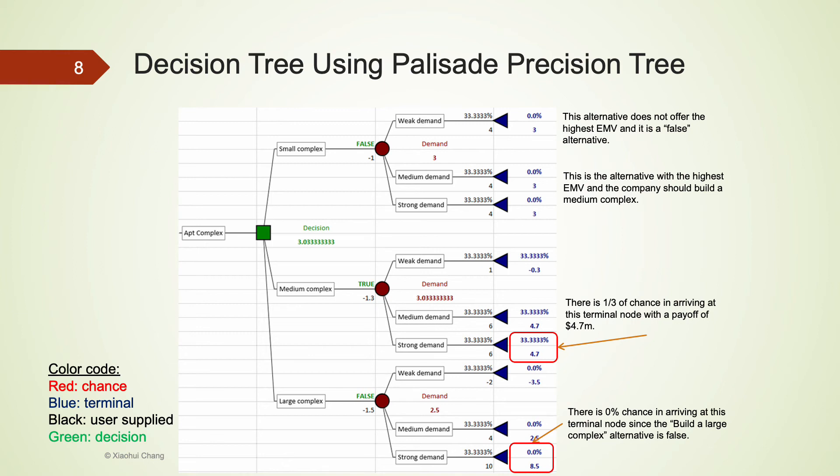For example, we consider a scenario where we build a Medium Complex and there is a strong demand. There is a zero chance that we arrive at this terminal node because the alternative that building a Large Complex is false. This is not the optimal solution, and we will never build a Large Complex using the EMV approach and we will never arrive at this terminal node. The EMV at this node can be calculated as the revenue that is $10 million while the cost is $1.5 million, so the payoff is $8.5 million.